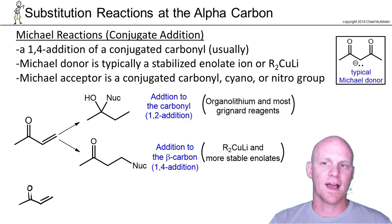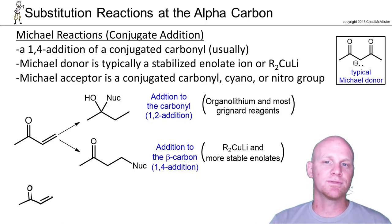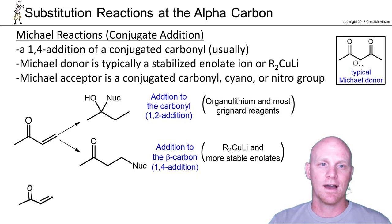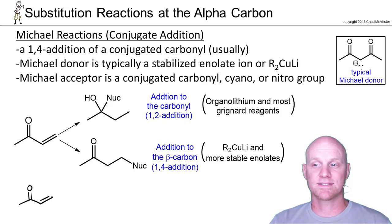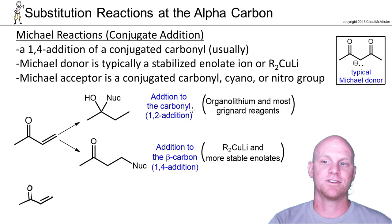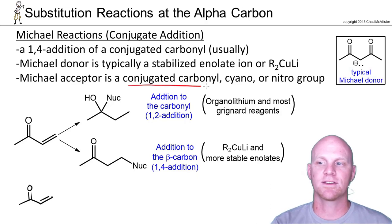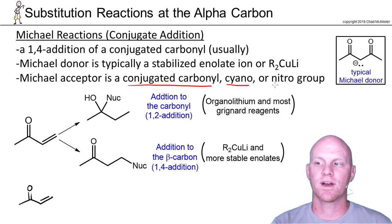In the Michael reaction, we have a very special nucleophile and a very special electrophile. Starting with the electrophile — sometimes called the Michael acceptor — it's generally going to be a conjugated carbonyl, but it might also be a conjugated cyano or a conjugated nitro group.